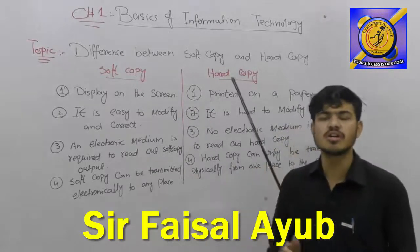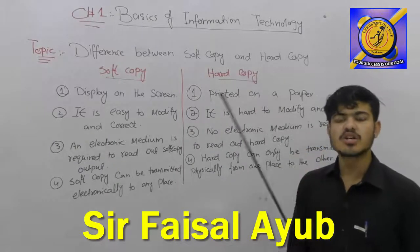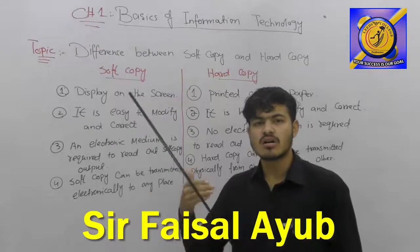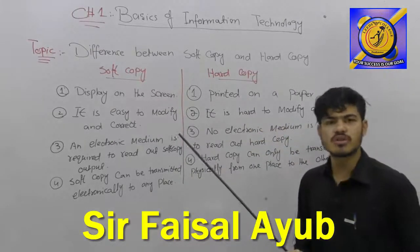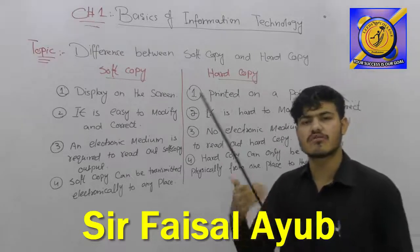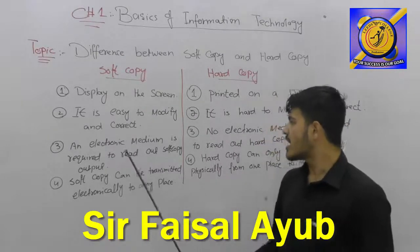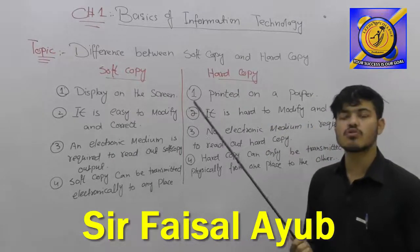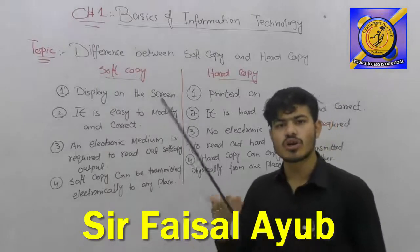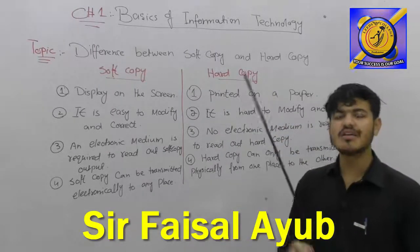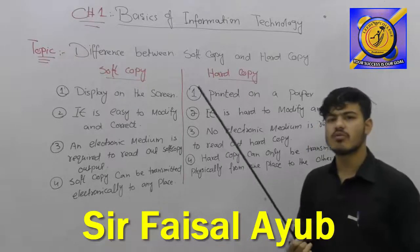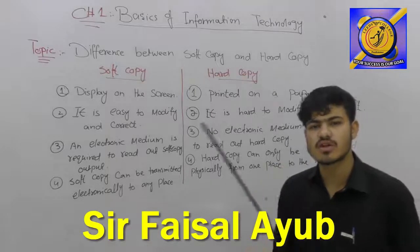Any electronic medium can store a soft copy. Hard copy is a physical version — a piece of paper — which can be read directly. Soft copy is stored on electronic components like a laptop, computer, or mobile device and can be transmitted electronically.